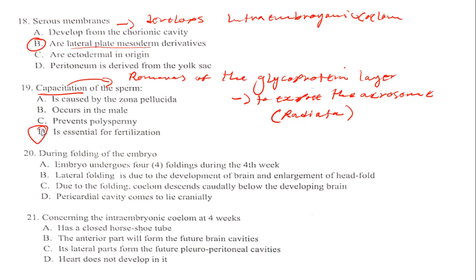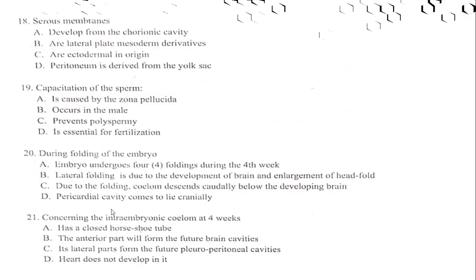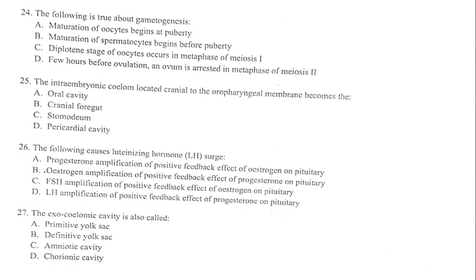During folding of the embryo, the embryo undergoes folding during the fourth week. The pericardial cavity comes to lie caudal — not cranial. Concerning the intra-embryonic coelom in week four: option A has a closed neural tube, the anterior part will form the future brain cavity, the lateral part forms the future pleura, but the heart does not develop there. The answer is C.